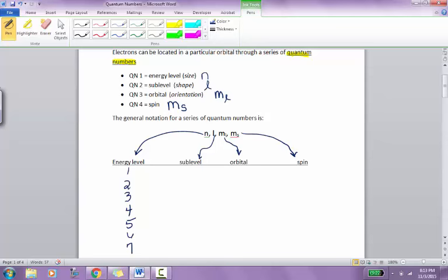The second number that's going to be given to any one electron is the l number, and that's for sublevel. So the sublevel depends on the shape. If it's s, we're going to give it a number of 0. If it's p, its number is going to be 1. If it's d, its number is going to be 2. And if it's f, the number will be 3. So that's the quantum number 2.